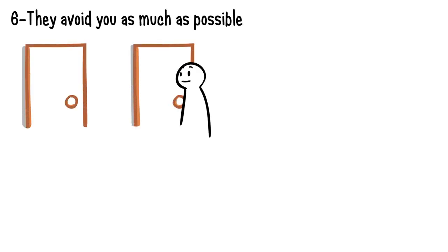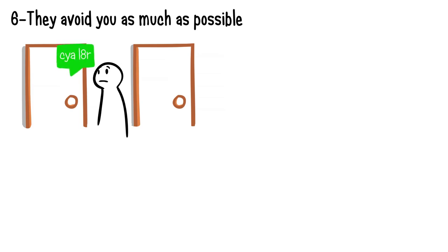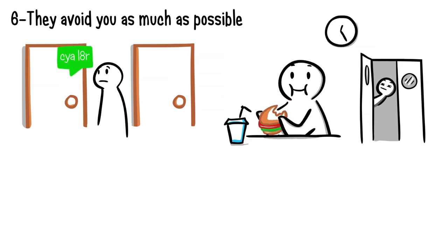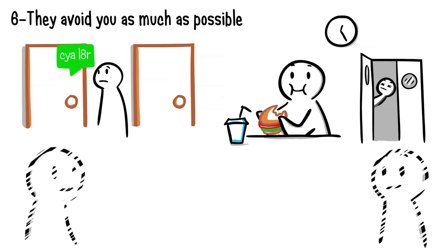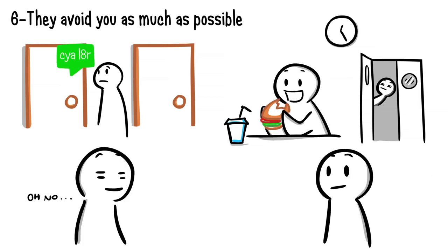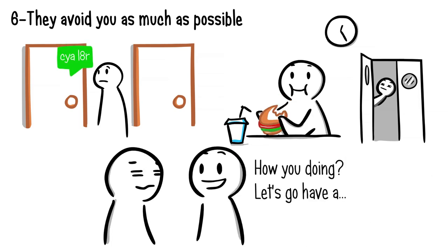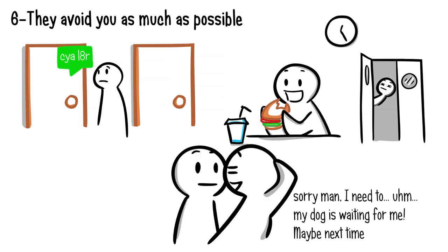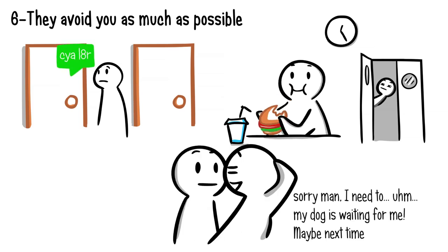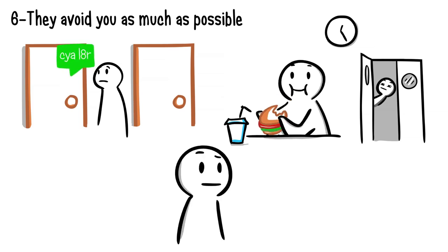Number 6. They avoid you as much as possible. Do they live or work in close proximity to you, but limit communication to emails or text messages? When someone secretly dislikes you, they will do whatever it takes to have minimum contact with you. It's especially a sign if they find out your schedule just to avoid you during your lunch hours or time you need to occupy the same space. And when you do end up bumping into one another, they'll always have an excuse ready at hand to avoid seeing you again.